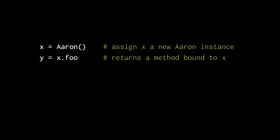What a method object consists of is simply a reference to the function and a reference to the instance, here x.